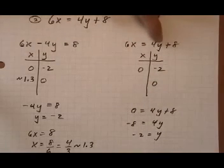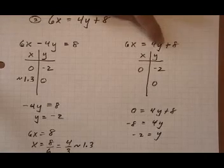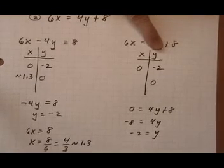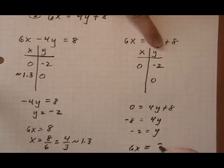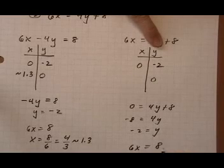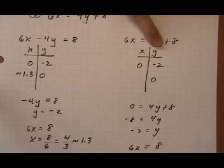And then let's put in y is 0. y is 0 makes this term go away. We get 6x equals 8. Dividing both sides by 6, we get x equals 8 over 6,